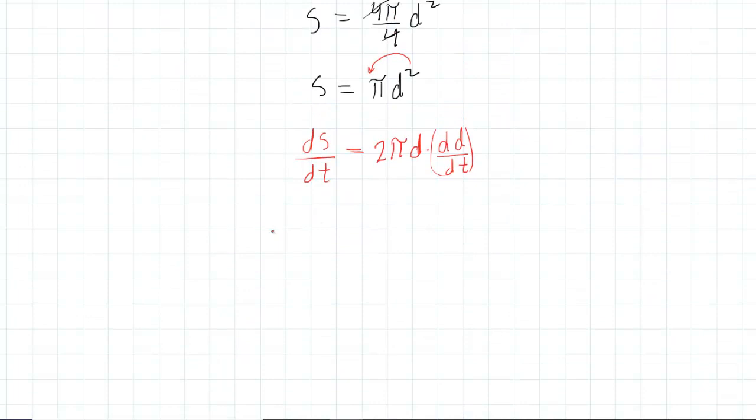We'll have negative 1 centimeter squared per minute equals 2π times the diameter of 10 centimeters, multiplied by the derivative of the diameter with respect to time.